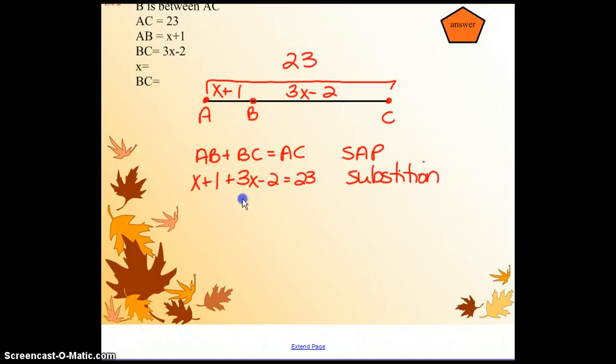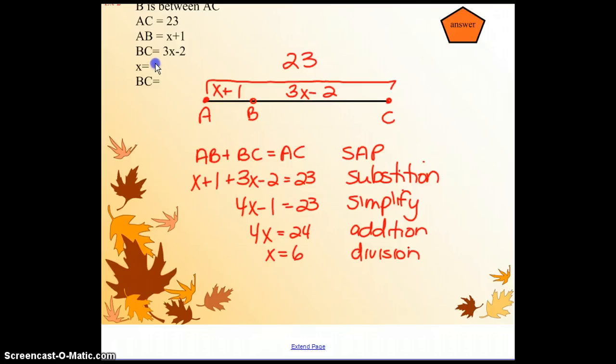Now we're going to combine like terms, so combining like terms, we're going to wind up getting 4X minus 1 is 23. We say we're simplifying, that's our justification. We are going to add our 1 to the other side. And now we are going to divide. Once we have that set, we can go up and we say we believe that X is going to be 6, but we should check and we also need to solve for BC.